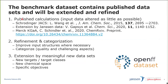Currently we are at stage one, including published calculations, starting with a Schrodinger dataset and extension by a couple of targets from Janssen. The input data is altered as little as possible to compare results to previously done calculations. On a later stage, we want to refine and categorize the data — improving input structures when necessary and categorizing by quality or challenging aspects. As a last long-term stage, we want to include meaningful new datasets, for example new targets or target classes, new chemical space, or specific challenges.